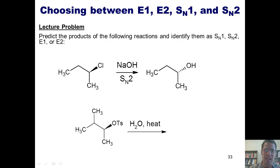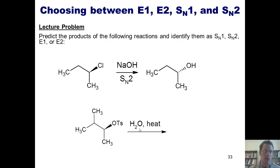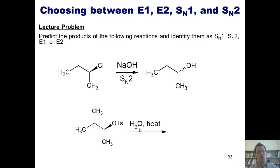In this example we go through the same three questions. Is my leaving group — this tosylate group — stuck to a primary, secondary, tertiary, or stabilized carbon? It is secondary, which means it could be any of the above. Is my nucleophile/base strong or weak? It's water, which has no localized negative charges, thus it is weak. That means it's going to proceed through either SN1 or E1. Is my nucleophile/base a nucleophile or a base? H2O is smaller than ethanol on paper, so it's a nucleophile, which means this will proceed through an SN1 mechanism.